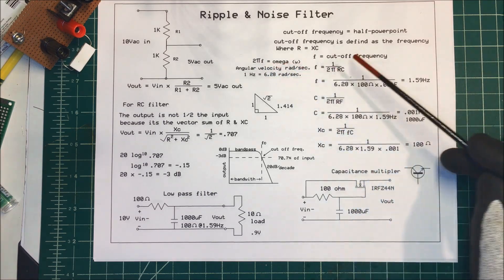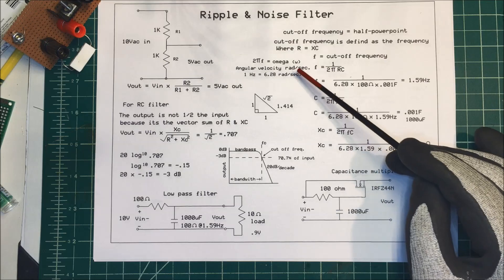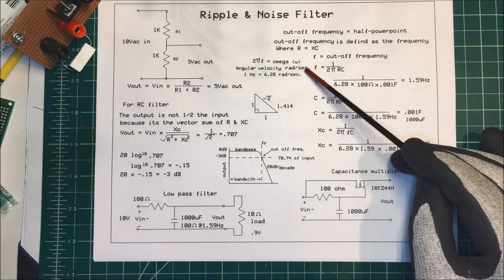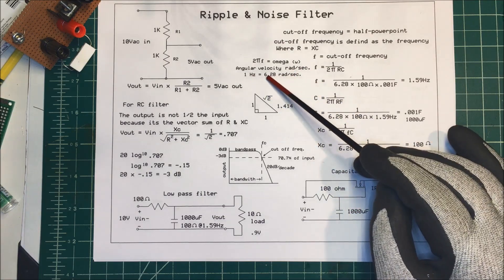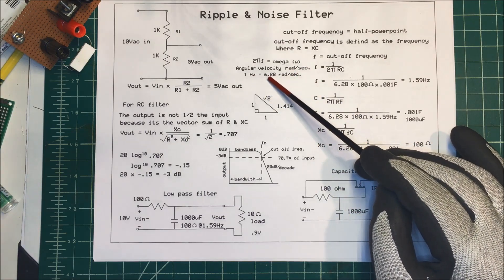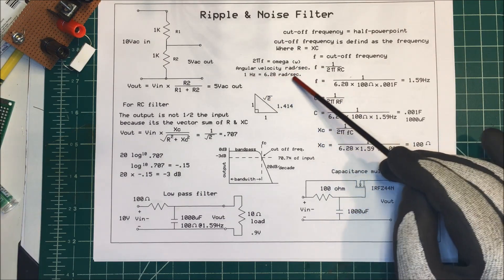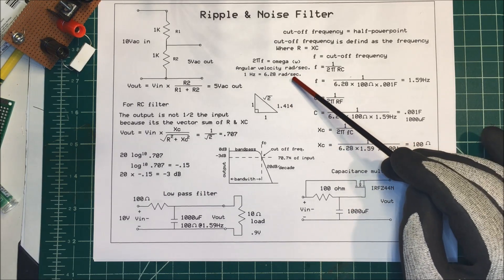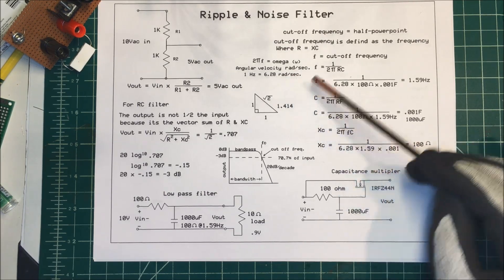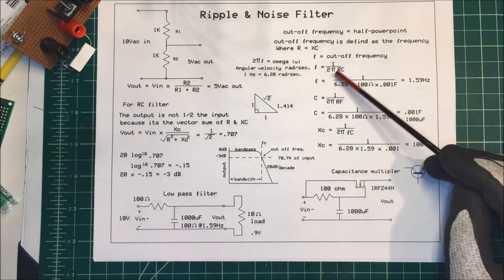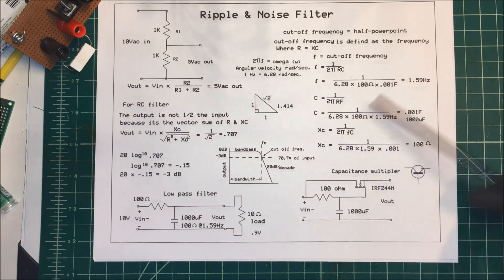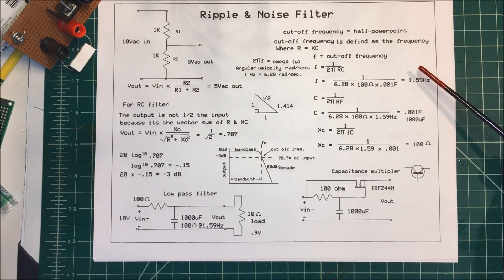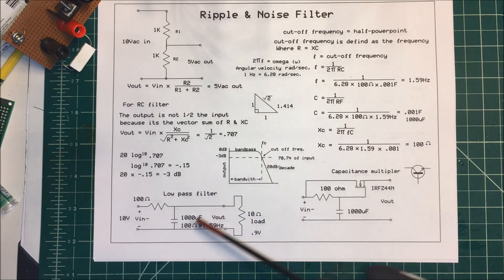We use 2π because frequency here is omega — angular velocity in radians per second. One hertz equals 6.28 radians per second, and that's just where this 2π comes from. We don't have to worry too much about that.